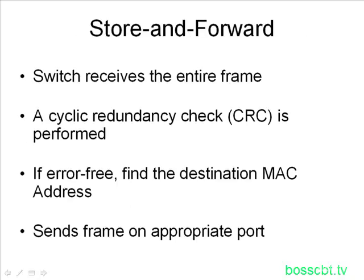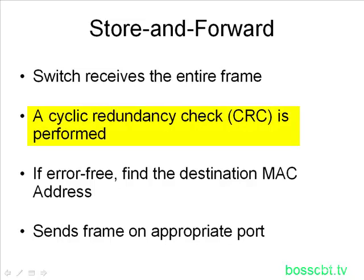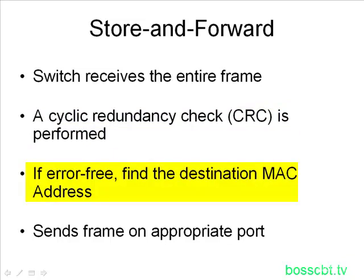Store and forward is the first method. A switch receives the entire frame before it does anything else — that is the single most important characteristic of store and forward. Once the entire frame is received, we perform the cyclic redundancy check to make sure no errors have been introduced. The frame check sequence is located in the trailer of the Ethernet frame. If the frame is determined to be error-free, the switch looks up the destination MAC address in the MAC address table, then forwards the frame.